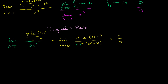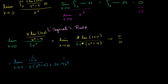Applying L'Hôpital's Rule: the derivative of natural log of 1 plus x is 1 over (1 plus x). For the denominator we use the product rule: the derivative of 3x times (x to the fourth plus 4) is 3 times (x to the fourth plus 4), plus 3x times 4x to the third. As x approaches 0, the numerator approaches 1 over (1 plus 0), which is 1. The denominator approaches 3 times 4 plus 0, which is 12. So the limit equals 1/12.